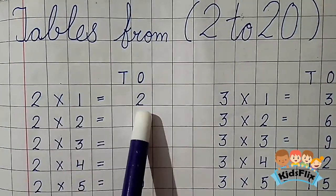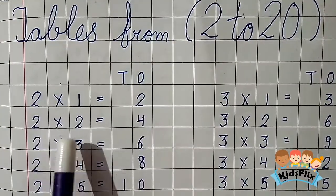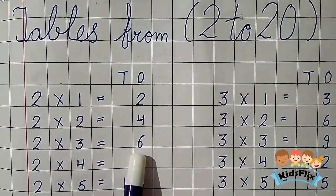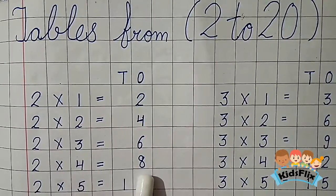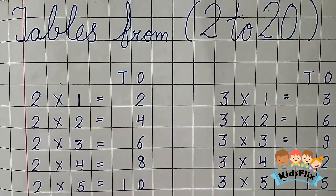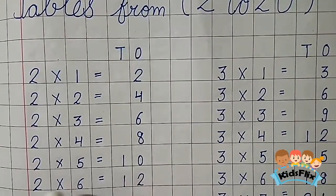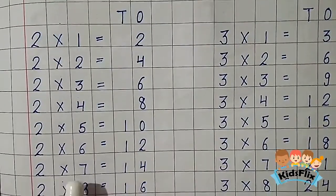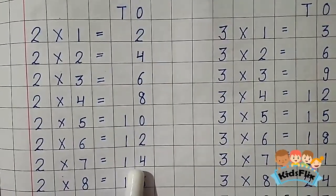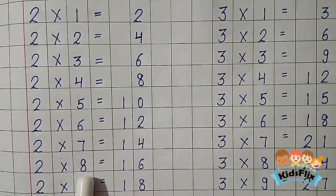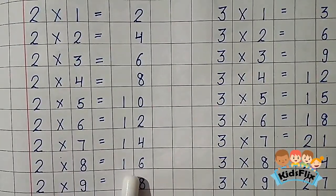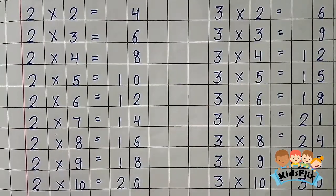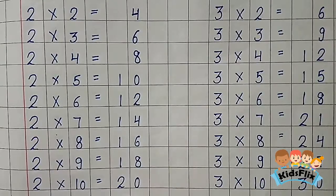2 1s are 2. 2 2s are 4. 2 3s are 6. 2 4s are 8. 2 5s are 10. 2 6s are 12. 2 7s are 14. 2 8s are 16. 2 9s are 18. 2 10s are 20.